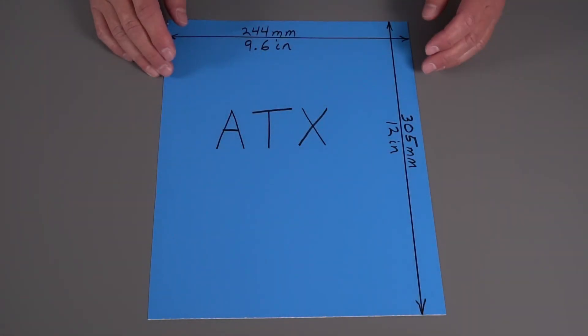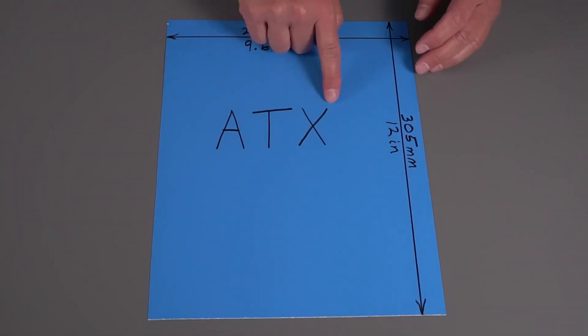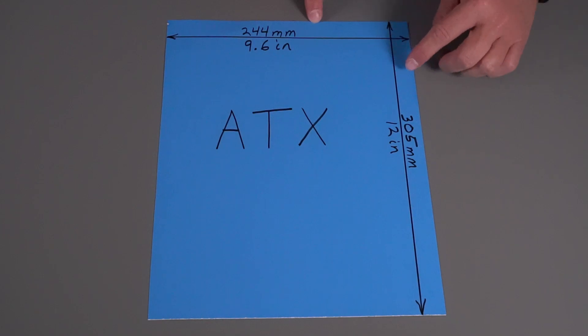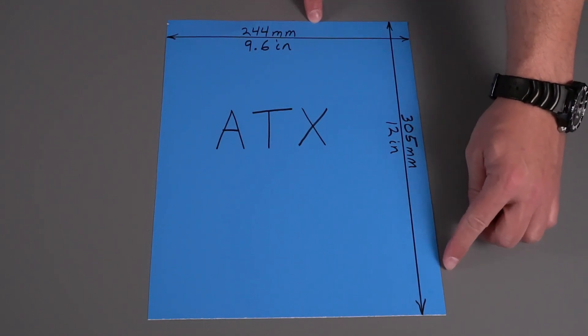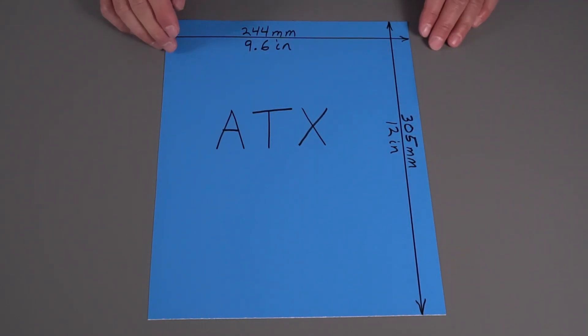The most common motherboard size that you're going to see is the ATX motherboard. This is 244 by 305 millimeters, or 9.6 inches by 12 inches.